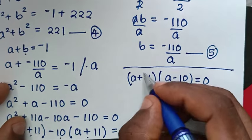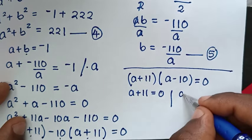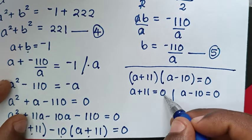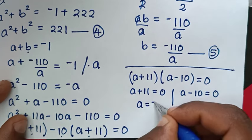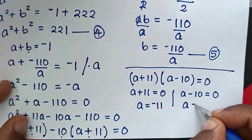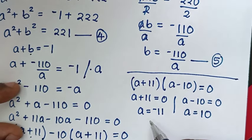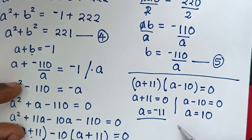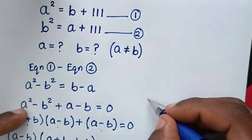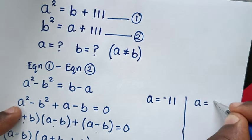From here we have two solutions: the first is a plus 11 equals 0, giving a equals negative 11; and the second is a minus 10 equals 0, giving a equals positive 10. So the first value of a is negative 11, and the second value of a is 10.